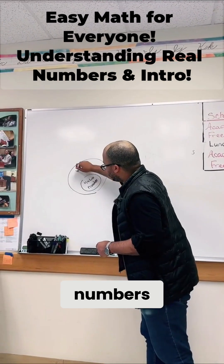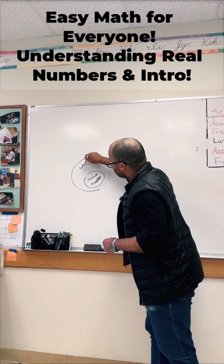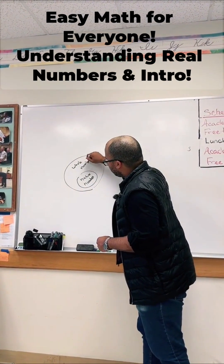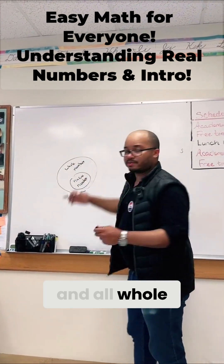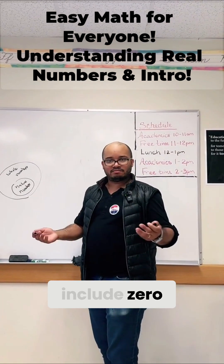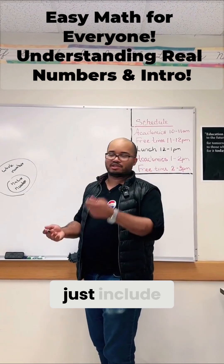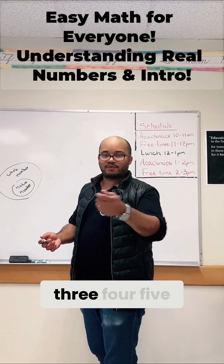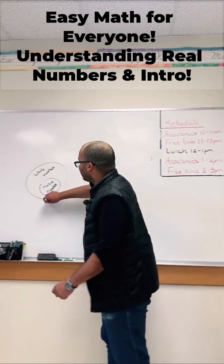And then we went to whole numbers. All whole numbers did was include 0 — so 0, 1, 2, 3, 4, 5, 6, 7, and onward.